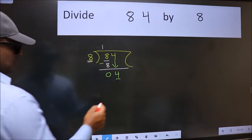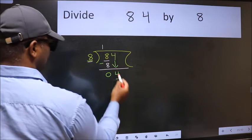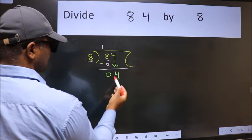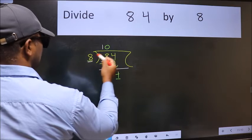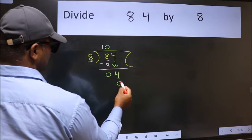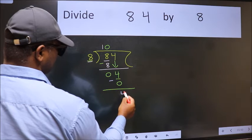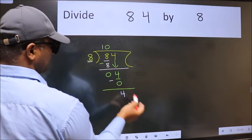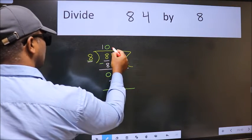Which number should we take here? If I take 1, we will get 8, but 8 is larger than 4. So what we do is we take 0. So 8 into 0 is 0. Now we subtract, we get 4. Over here we did not bring any number down, and 4 is smaller than 8, so now we...